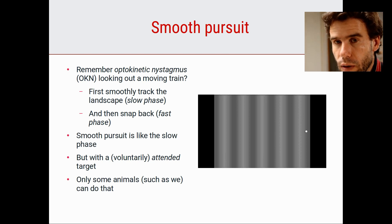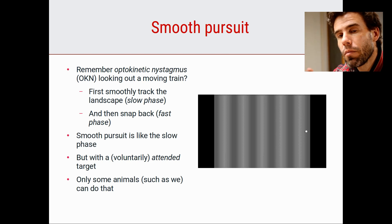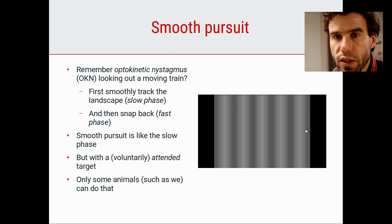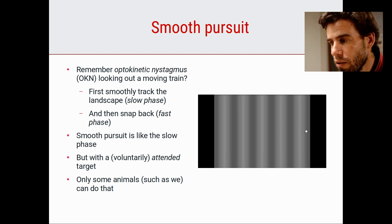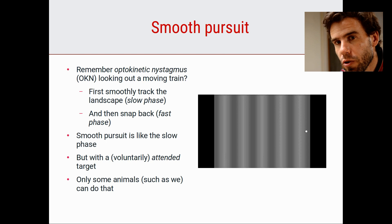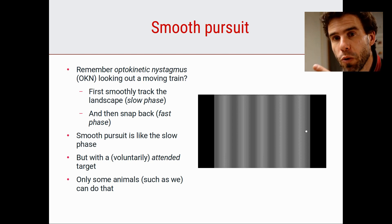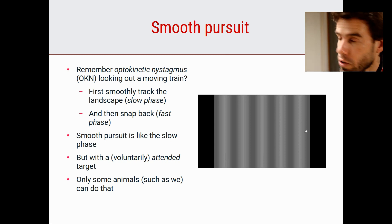Only a few kinds of animals can actually do smooth pursuit - we are very good at it. There is a kind of hierarchy of eye movements: gaze stabilization reflexes are done by basically all animals with eyes; some animals also show saccadic-like eye movements; and only some animals like us also show smooth pursuit. There is almost an evolutionary progression.